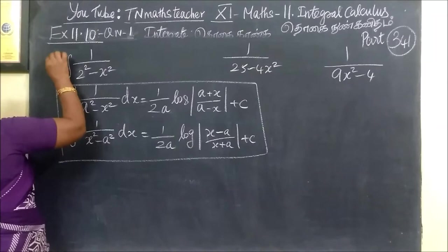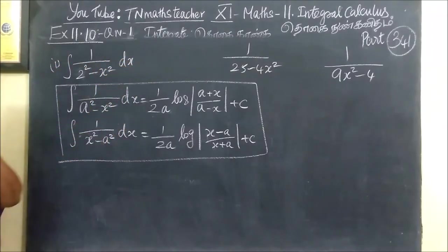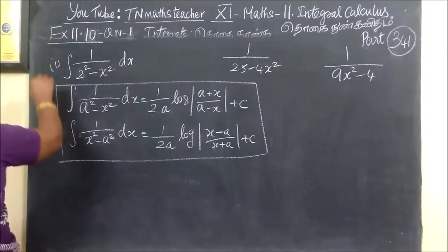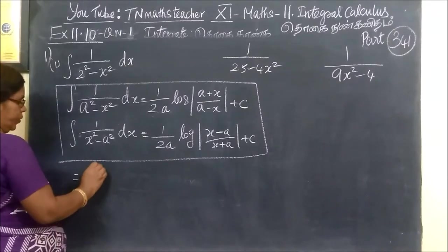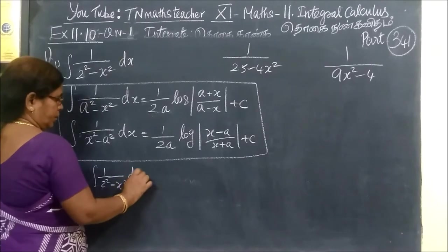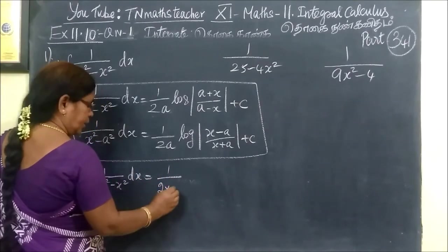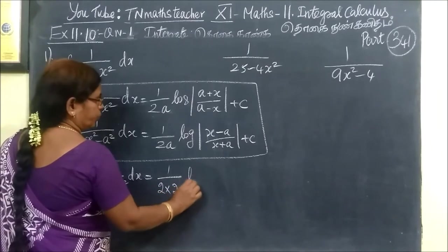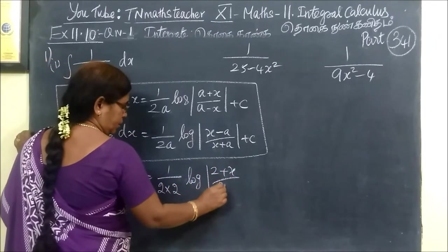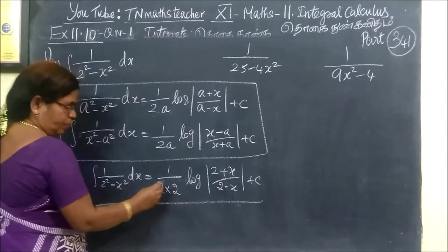This is the first question. Question number 1: integral of 1 by 2 squared minus x squared ds. Equal to 1 by 2a, where a squared equals 4, so a equals 2. Then 1 by 2 into 2, into log of a plus x, which is 2 plus x, by 2 minus x.